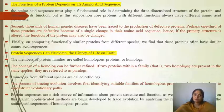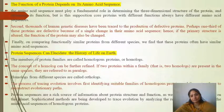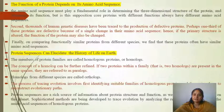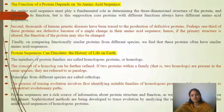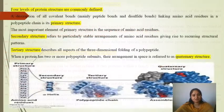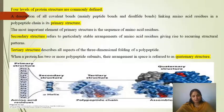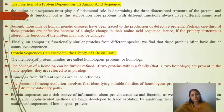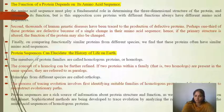The function of a protein directly relates to its amino acid sequence. The amino acid sequence plays a fundamental role in determining the three-dimensional structure of a protein and ultimately its function. The primary structure — the sequence of amino acids — determines the higher-order structure, including quaternary and tertiary structures, which in turn relate to its function.